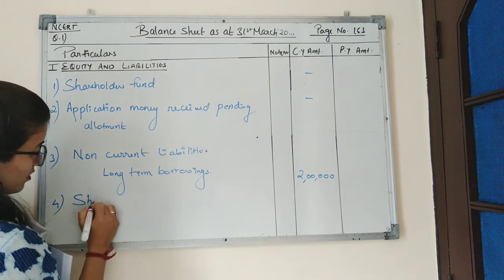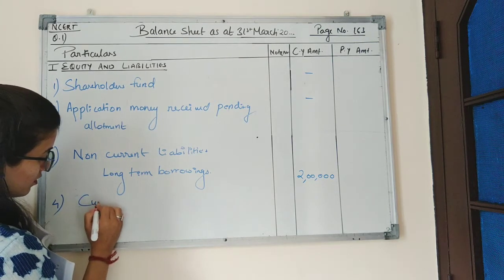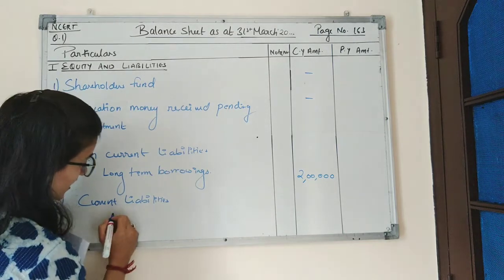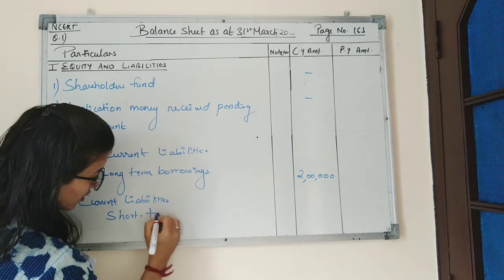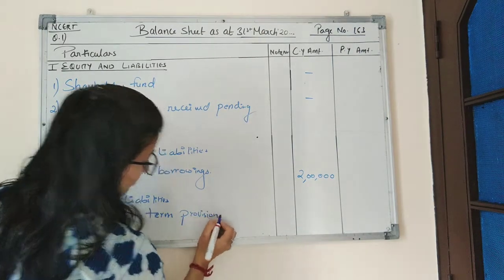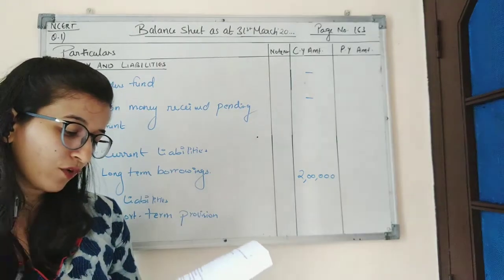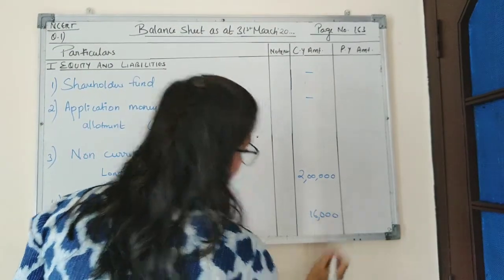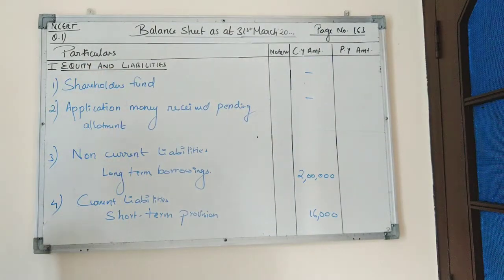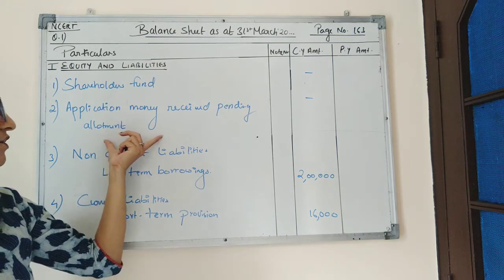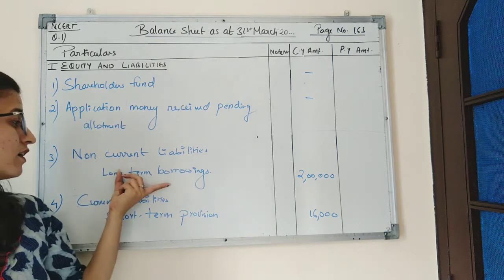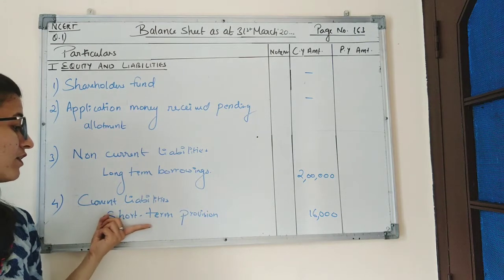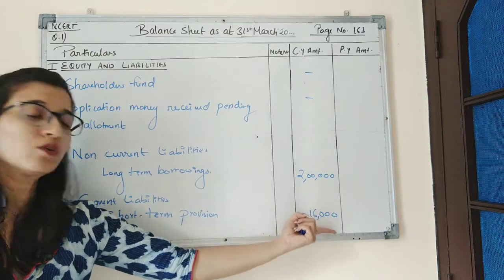Fourth is current liabilities. Under current liabilities there is a sub-part called short-term provision. It is given in the question that provision for tax amounts to ₹16,000. So we will write this amount in the current year: ₹16,000. This completes the equity and liabilities part, where under non-current liabilities we have 8% debentures of ₹2,00,000 and under current liabilities we have provision for tax of ₹16,000.